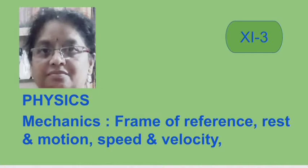Dynamics has further two branches, kinematics and kinetics. In kinematics, we study about the motion of the object without considering the factors causing the motion. In kinematics, the motion of an object can be described in terms of two fundamental physical quantities, length and time, and two derived physical quantities, velocity and acceleration. In kinetics, we study about the motion of object along with the cause or causes of the motion. First, we will discuss kinematics.